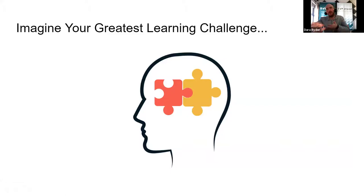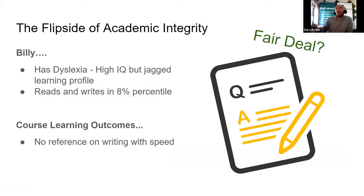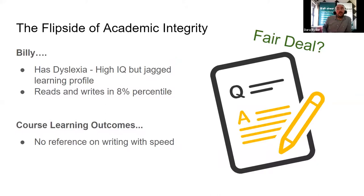What I want you to do is imagine your greatest learning challenge — your greatest learning weakness, the thing you find most difficult. I want to give you the flip side of academic integrity. We've talked a lot about it today. Consider Billy, who has dyslexia. He has a very high IQ, but he has a jagged learning profile — his reading and writing skills are not as strong as others. He's in the 8th percentile, meaning 82% of the population read and write more proficiently than him. The corresponding learning outcomes he's taken have nothing to do with writing or writing speed. Is it a fair deal for Billy that we're asking him to demonstrate what he knows through a three-hour written assessment, even with small piecemeal accommodations? The academic integrity question is: are we holding up our end of the bargain as institutions?